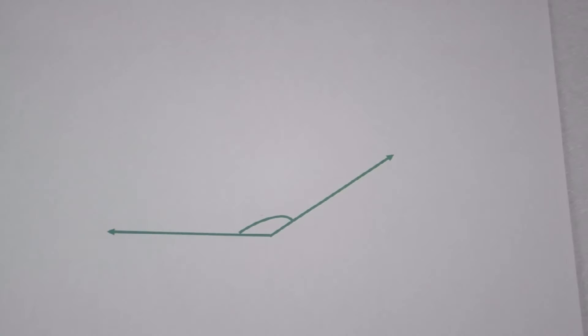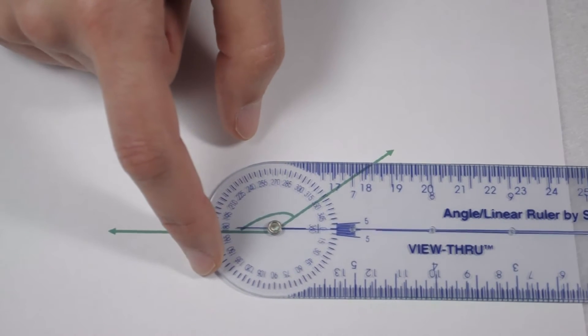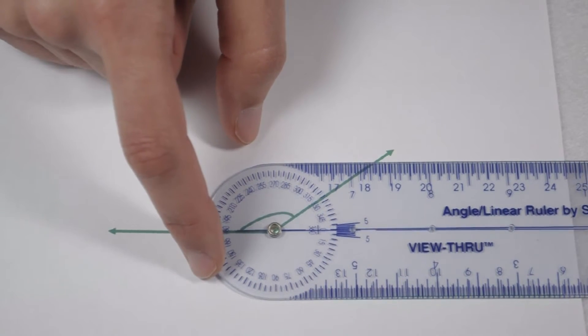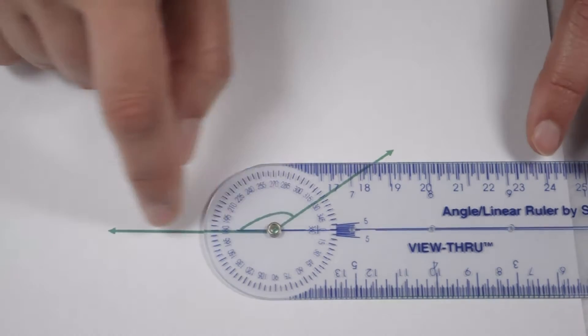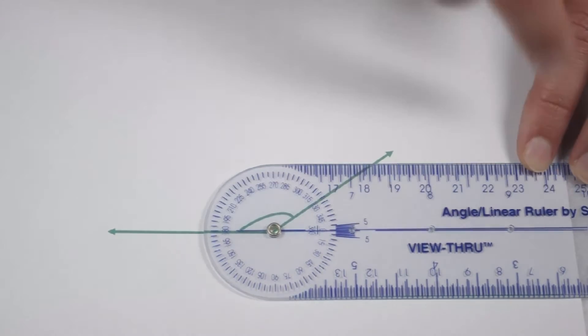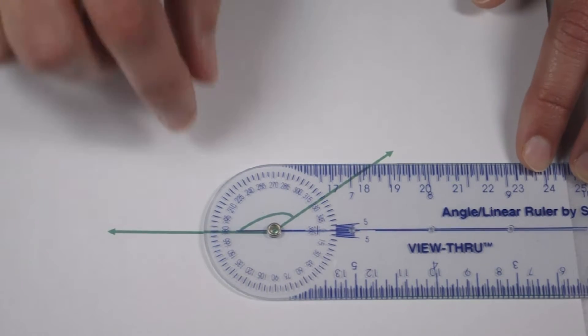From looking at this angle, we can tell it's an obtuse angle. So we know it's going to be between 90 and 180 degrees. When we go to line up our angle ruler, we can see if I line it up at the vertex, this ray and that ray don't line up with my leg. So now we have a couple choices.